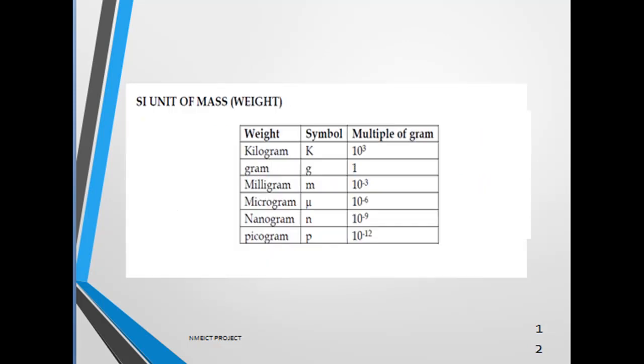There are SI units of masses. Kilogram is a multiple of gram, 10^3. Gram is denoted by small g. Milligram equals 10^-3 gram. Microgram equals 10^-6 gram. Nanogram equals 10^-9 gram. Picogram equals 10^-12 gram.